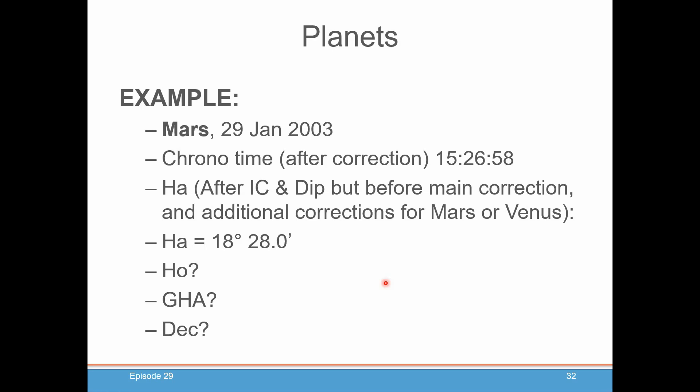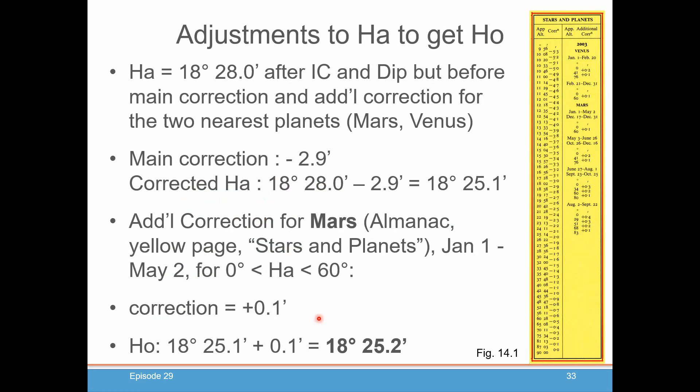So let's do an example and walk it through to show you that this is basically just like the Sun with just two little differences having to do with velocity and declination. Here's Mars, 29th of January 2003. We're going to assume you've done all your corrections to your chronometer and so you know that the time on the 29th of January was 152658 UTC. We're going to assume you've already done your IC, your index correction and dip to your sextant. So now you have your apparent altitude, your HA, before you've done any other corrections. So we'll assume you've done all that and you've gotten 18 degrees and 28 minutes. So that's all the same as you would do for the Sun. So what we want to do is show how we get HO, GHA, and declination.